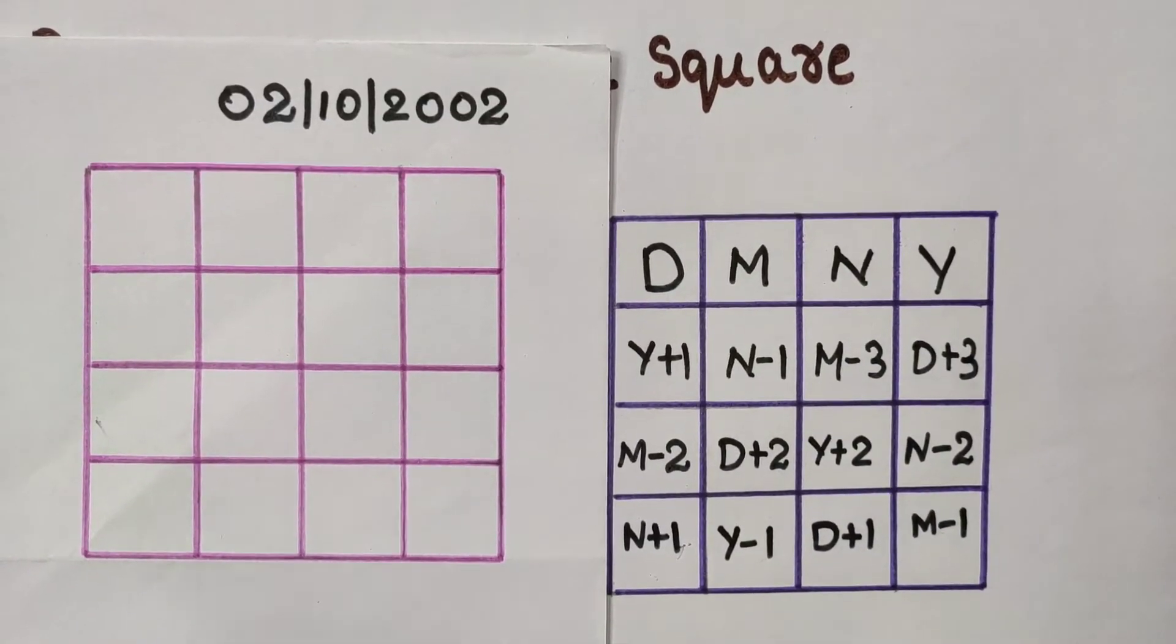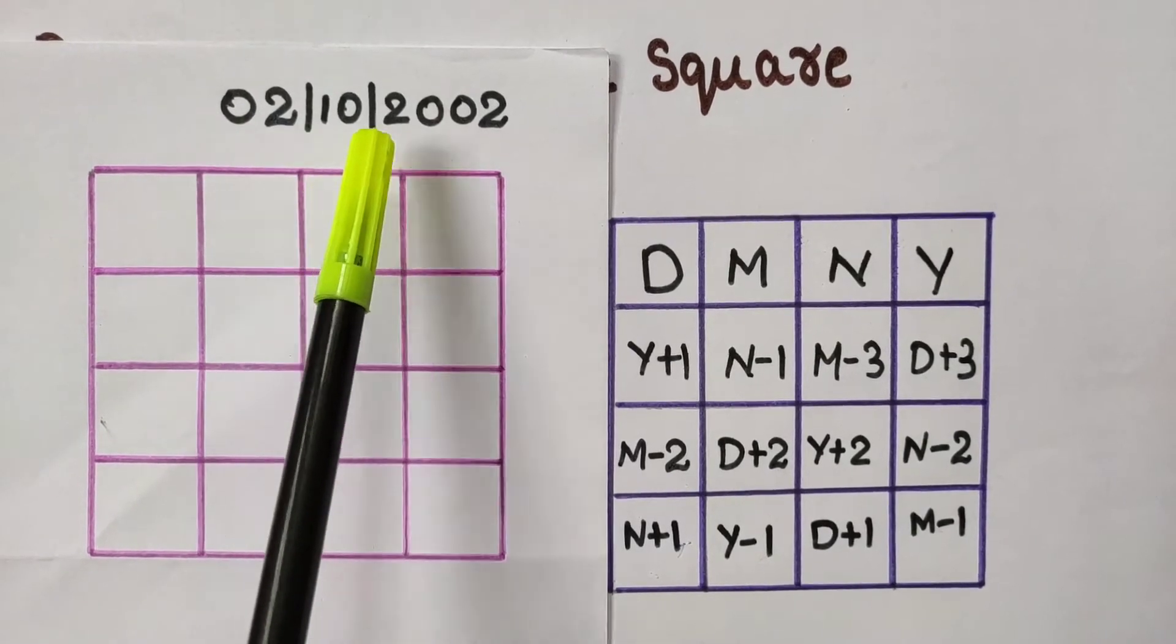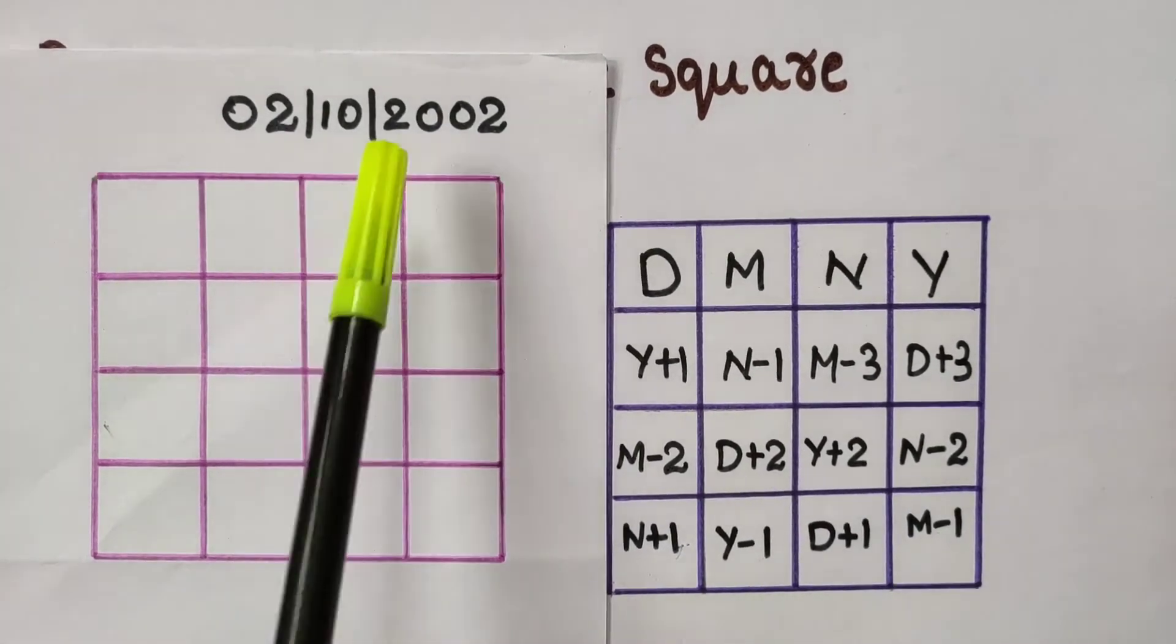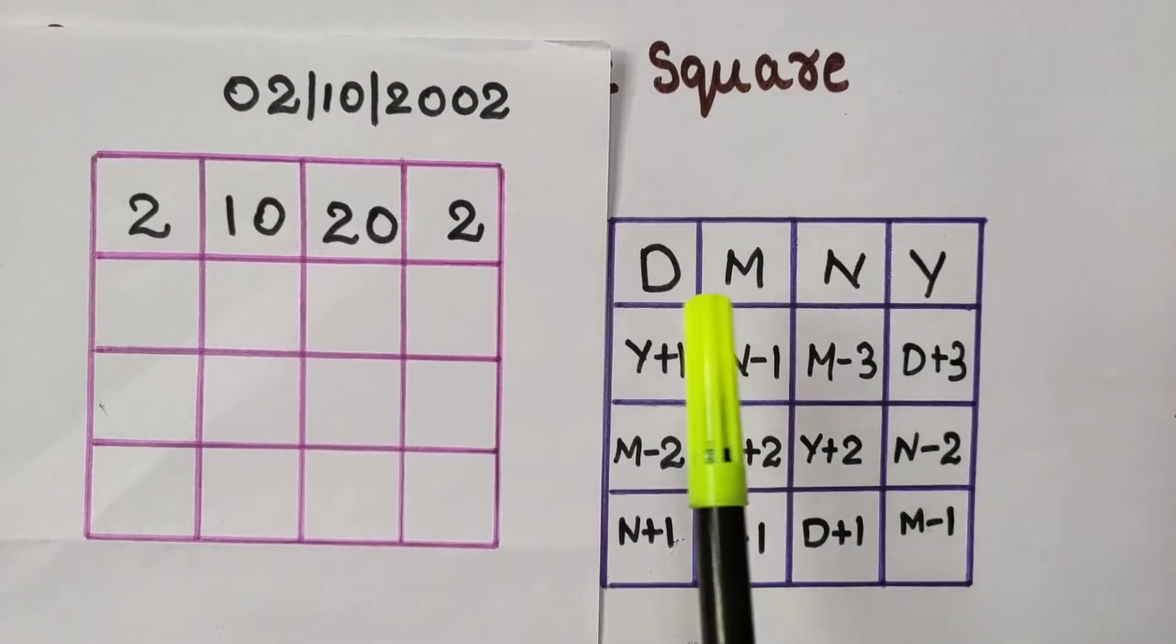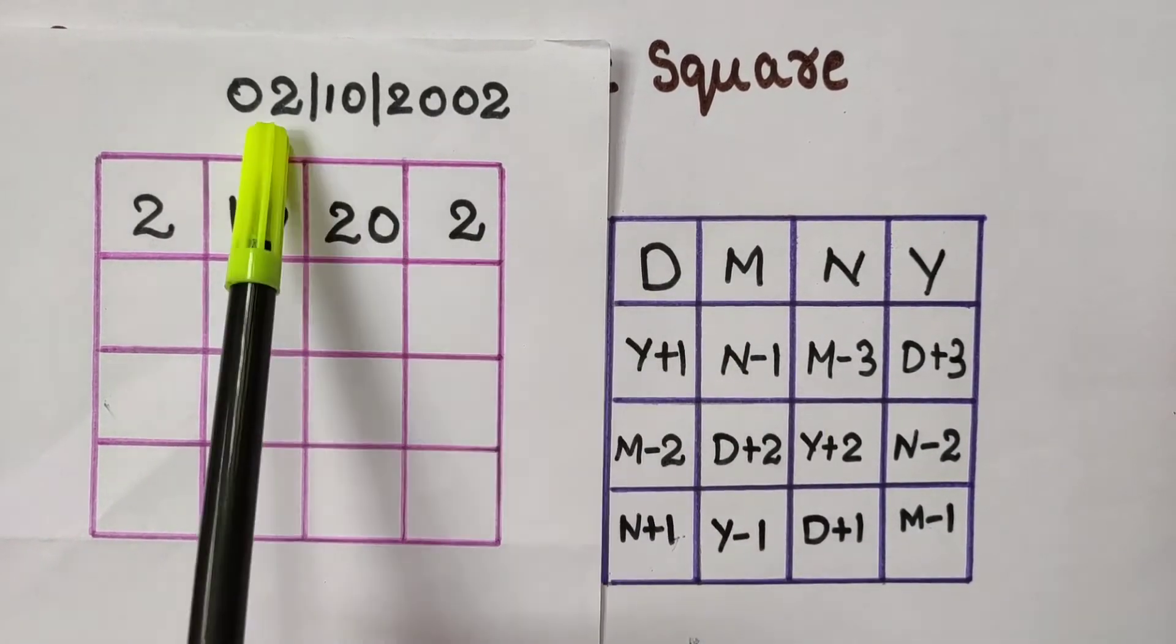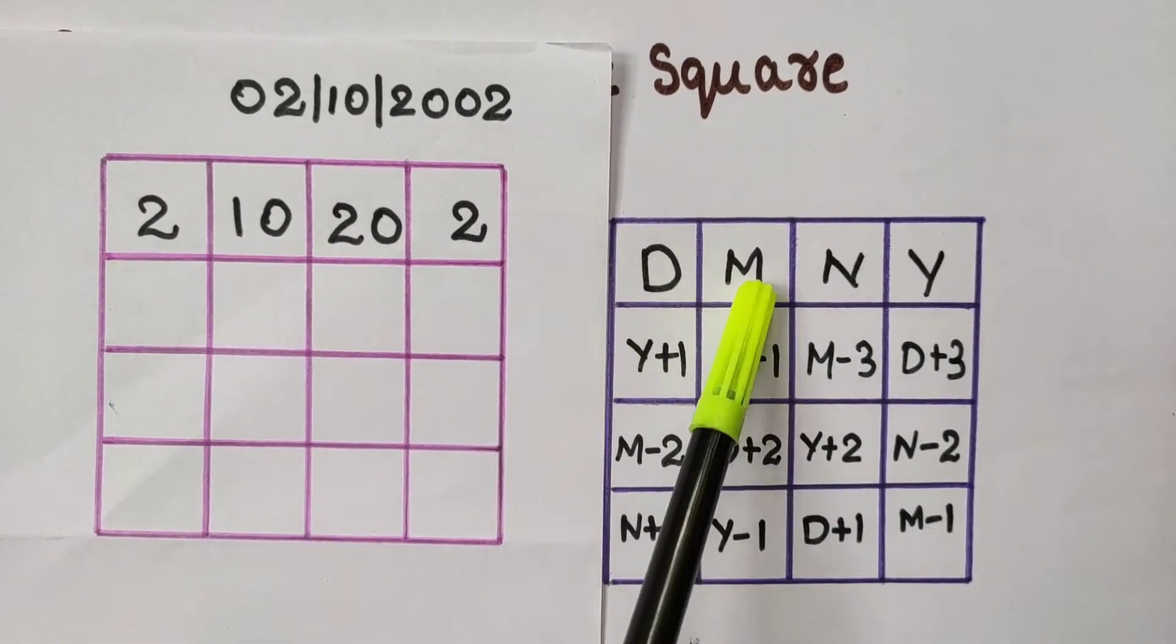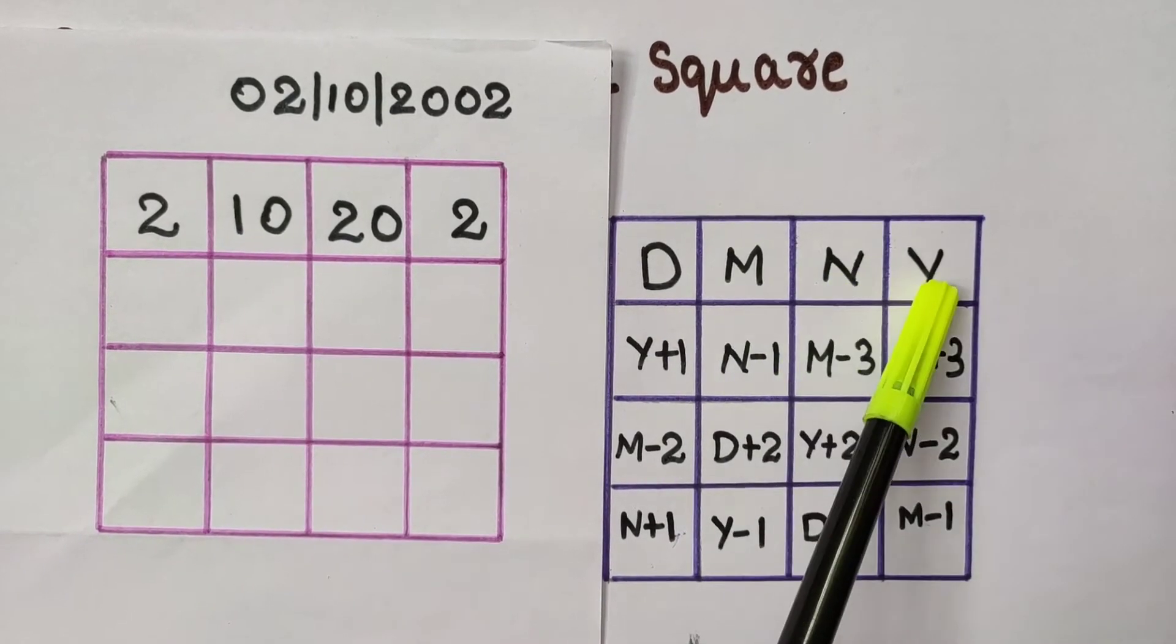Let's see one example. Take the date 02/10/2002. Let us make a magic square using this date. As in this box, in place of D we can write 2. Month in this box. 2002 we can split as 20 equal to N and 02 as Y.